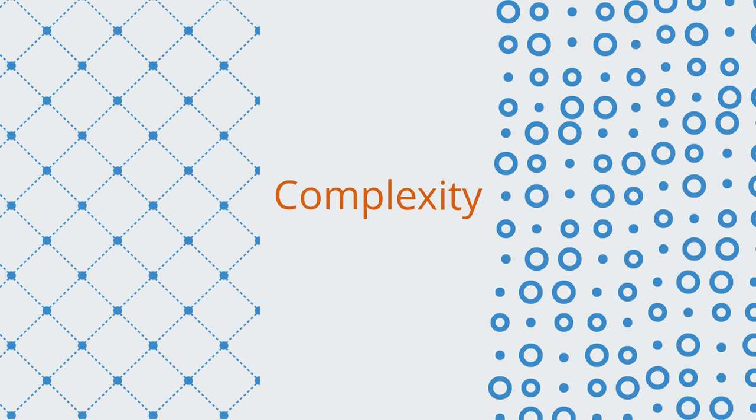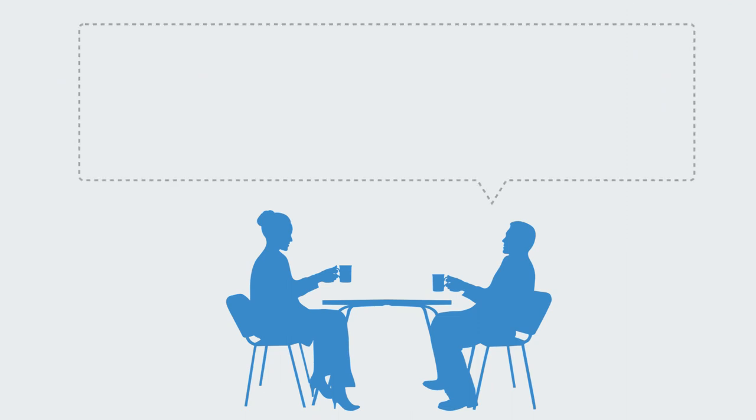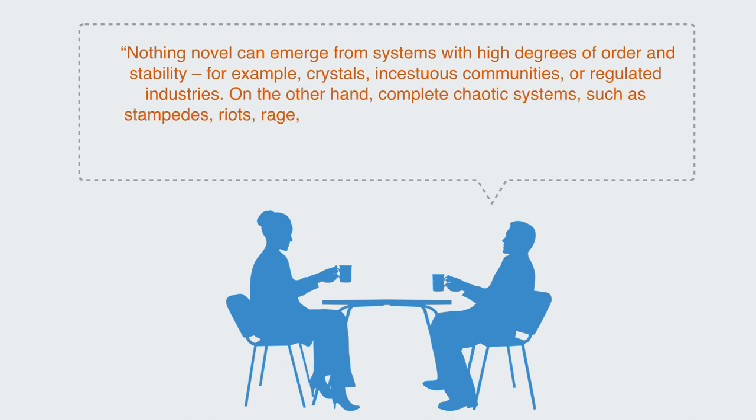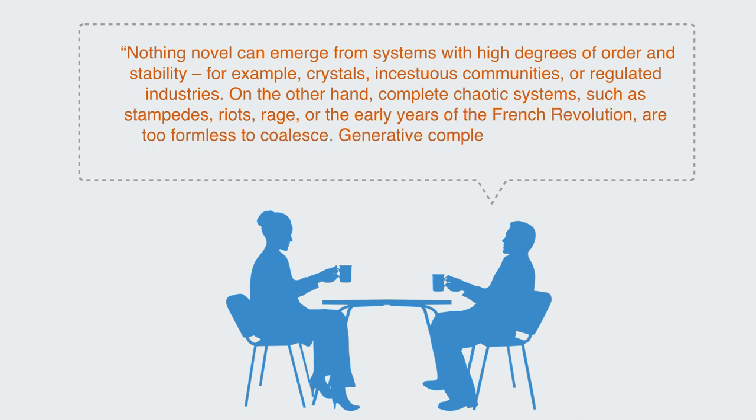In the book Complexity and Organization, the author writes: Nothing novel can emerge from systems with high degrees of order and stability, for example crystals, incestuous communities, or regulated industries. On the other hand, complete chaotic systems such as stampedes, riots, rage, or the early years of the French Revolution are too formless to coalesce. Generative complexity takes place in the boundary between regularity and randomness.